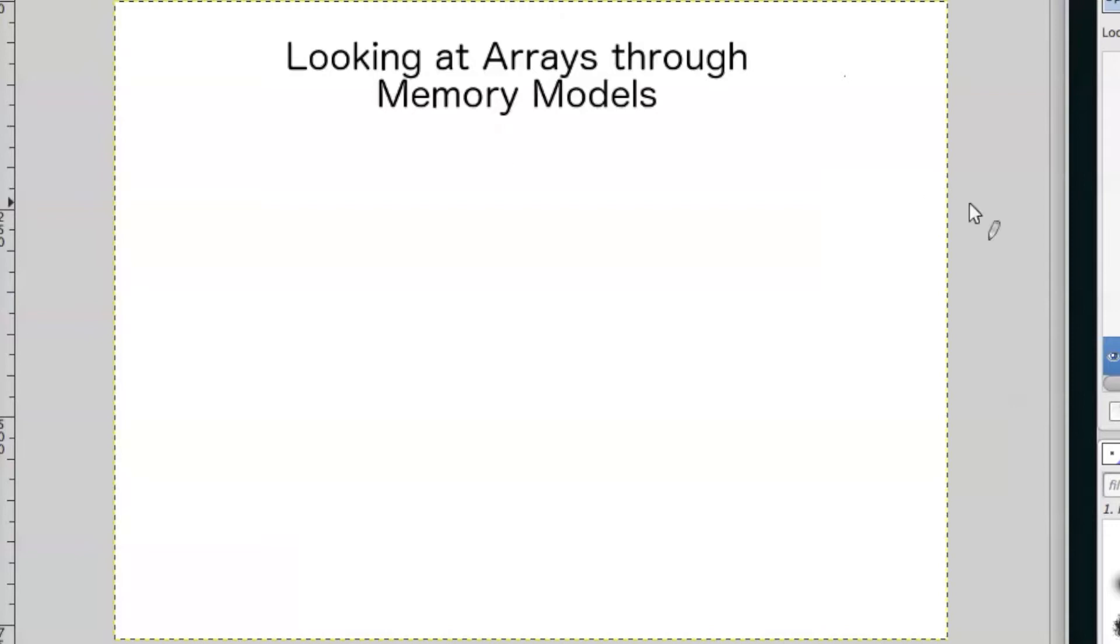So let's get started by creating a reference first. So here we have array1 which is going to be the name for a reference, but right now it's not pointing to anything. So let's go ahead and draw that in terms of our memory model. So here we have array1 and then this is where it's going to point at something if it does, but right now it doesn't.